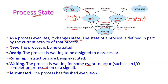Once the I/O or event completes, the process goes back to the ready state and waits again in the ready queue. If an interrupt occurs during execution — for example, another process with higher priority arrives — the process also returns to the ready state. Once the process executes successfully, it moves to the terminated state and exits the CPU.